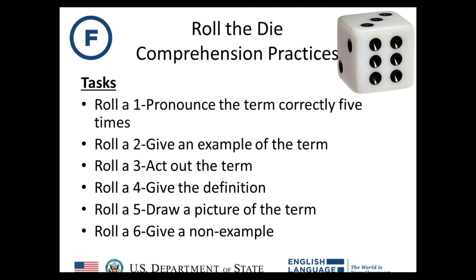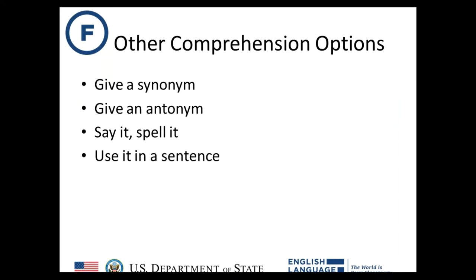Some other strategies you could swap in for comprehension include giving a synonym or an antonym, which is almost like a non-example, or 'say it and spell it' — especially with a word like 'energetic' that's a little harder to spell — or use it in a sentence. You can swap out any options you don't like and insert different ideas that work better for your classroom and students.